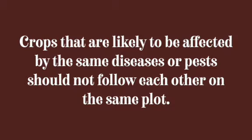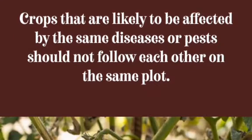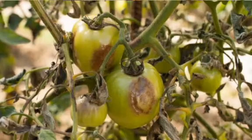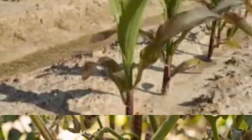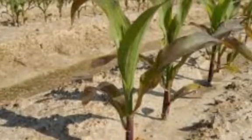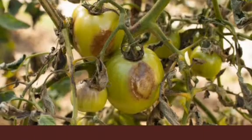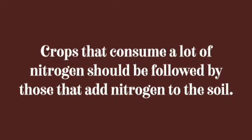Crops that are likely to be affected by the same disease or pest should not be allowed to follow each other on the same plot. For instance, there are diseases that affect maize and tomatoes, and when you plant related crops they can also be affected. Desist from planting such crops in succession on the same plot.